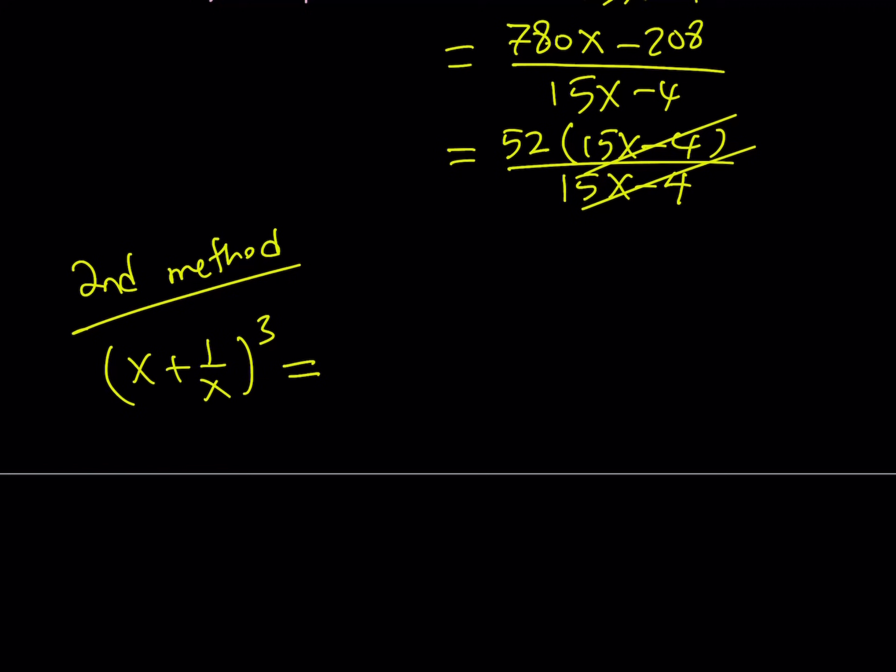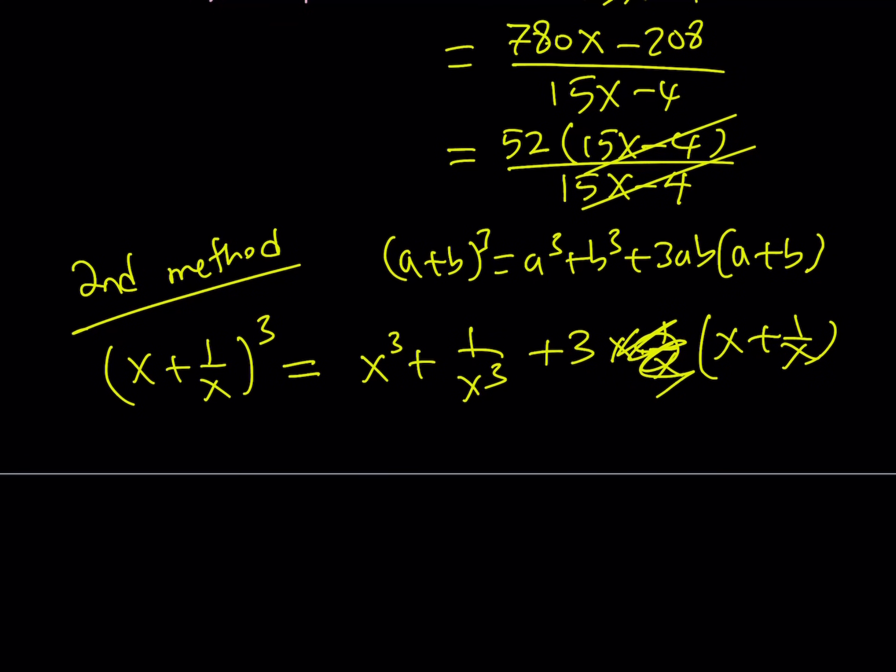So I'm going to start by cubing x plus 1 over x. So can I use an identity? Remember I told you earlier that this can be written as a cubed plus b cubed plus 3ab times a plus b. And I told you that this is a very helpful identity. It's going to be very helpful here. So I can write it like this: x cubed plus 1 over x cubed plus 3 times x times 1 over x times x plus 1 over x. But x times 1 over x is equal to 1, so I can totally forget about that.